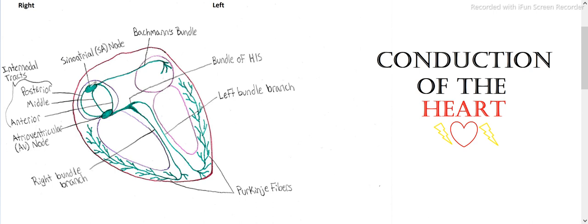If for some reason the sinoatrial node, the pacemaker of the heart, is not creating impulses, this AV node can be the secondary pacemaker, and it can actually create its own electrical impulse, and it will travel down the ventricles. Now, if both the SA node and the AV node are not creating those electrical impulses, the Purkinje fibers can, but it is not adequate to keep up enough blood pressure in our bodies to sustain life.